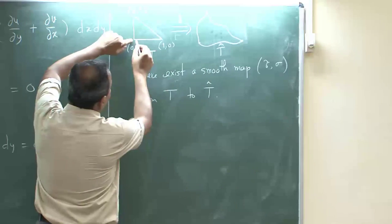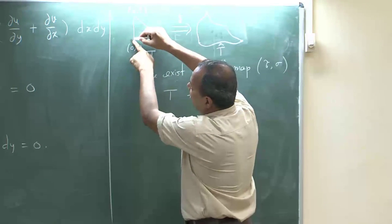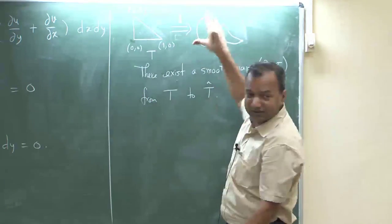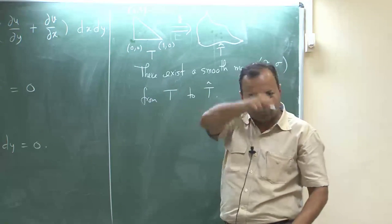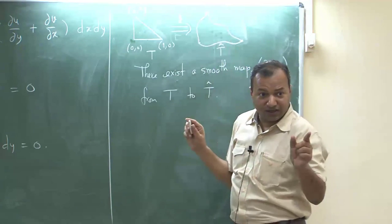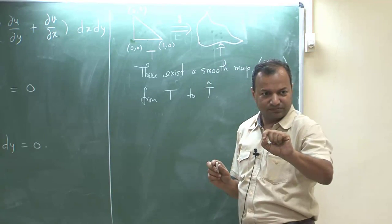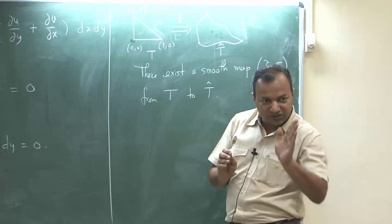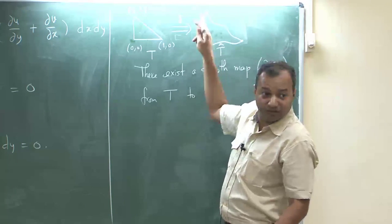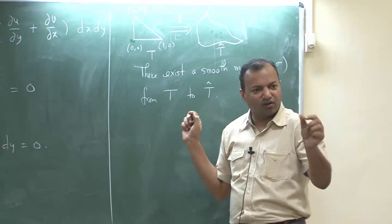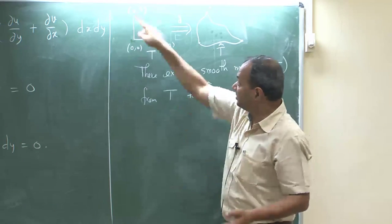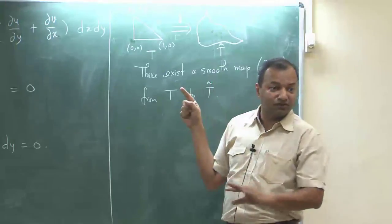Intuitively, you take this corner, map it to that corner, and just move along mapping points along this edge. This length may not be the same as that length, so you stretch the map a bit and also keep turning according to this curve. The key thing is that neighboring points get mapped to neighboring points and the tangents move very smoothly because the boundary is smooth. So that shows the mapping from this edge to that edge is continuous and differentiable.